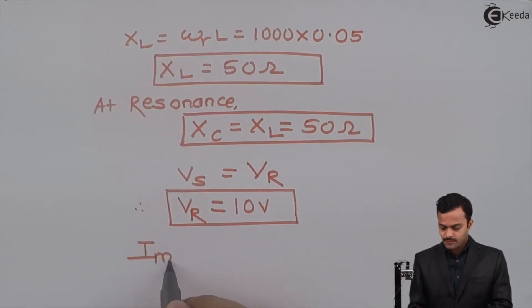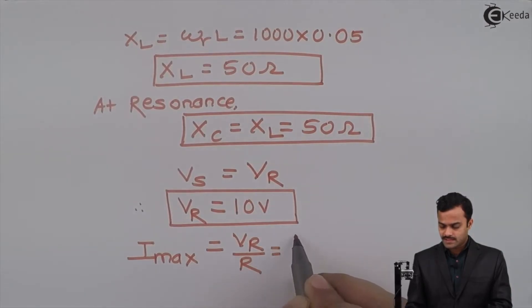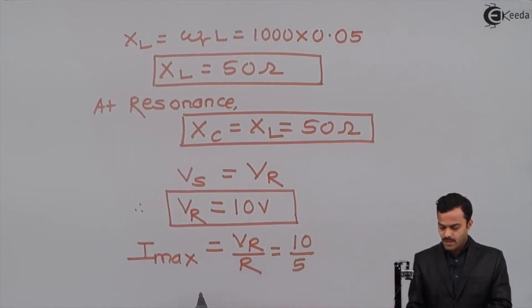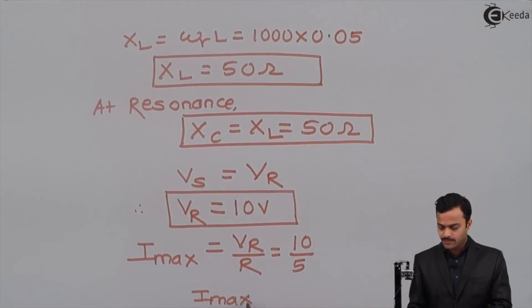If 10 volt is the voltage across resistance, I can get maximum current in the circuit equal to Vr by R. Vr is 10, R is 5. Maximum current flowing through the circuit will be equal to 2 ampere.